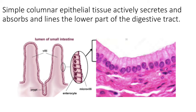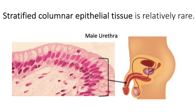Stratified columnar epithelial tissue, while relatively rare, is composed of two layers of columnar cells. The basal layer appears a little bit cuboidal, but it's that top layer that we always use to classify this tissue. The apical layer of cells is most definitely columnar in shape. We find this tissue, as mentioned, in a portion of the male urethra.